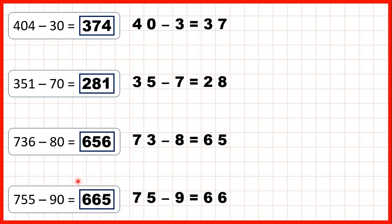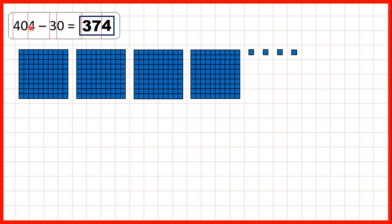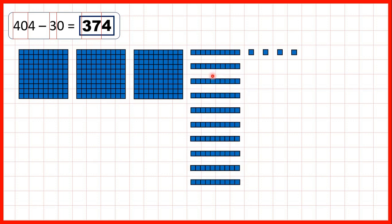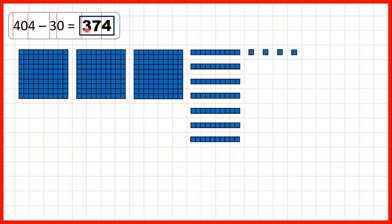Now let's take a closer look at these questions and think about why this method works, and also why even though we're subtracting tens, our hundreds digit often needs to change as well. For 404 minus 30, we start with four hundreds, no tens, and four ones. But we need to subtract three tens, so we need to exchange one of our hundreds for ten tens. Then we can take 3 tens away, leaving three hundreds and seven tens. That's why working out 40 minus 3 equals 37 helped us — the four ones stayed the same because we're not subtracting any ones.